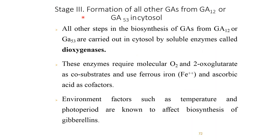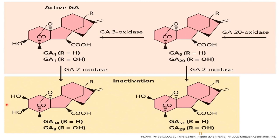The third stage involves formation of all other gibberellic acids from GA12 or GA53 in the cytosol. All subsequent biosynthetic steps are carried out by soluble enzymes called dioxygenases, which require molecular oxygen and 2-oxoglutarate as co-substrate and use ferrous ion and ascorbic acid as cofactors. Environmental factors such as temperature and photoperiod are known to affect the biosynthesis of gibberellins. In this way, all other gibberellic acid forms are produced from GA12 or GA53.